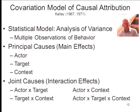Kelley argued that over multiple observations of behavior, we abstract a body of information that allows us to partition the variance in behavior into its principal causes: either the actor (a main effect), the target of the action, or the context. You can also add joint causes — interaction effects — such as something about the particular combination of actor and target, target and context, actor and context, or the full three-way blend of a single actor, target, and context.